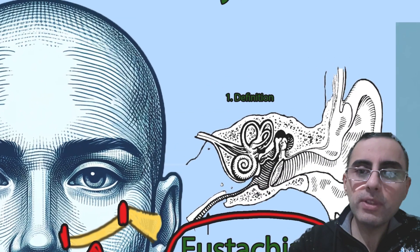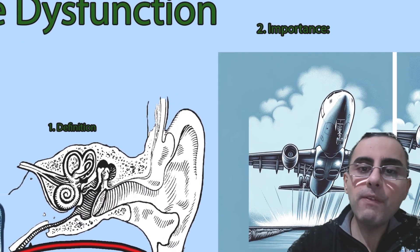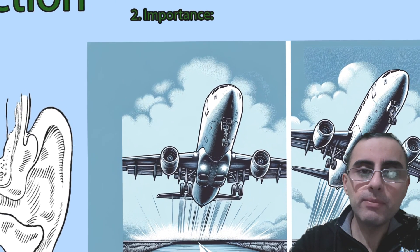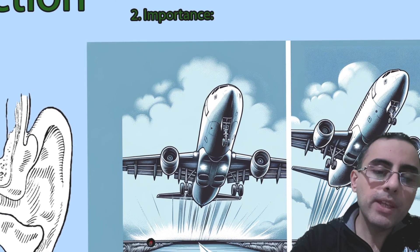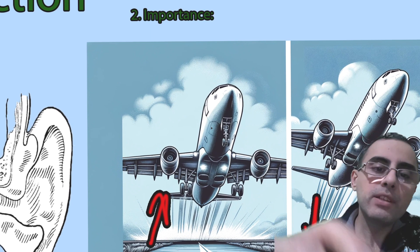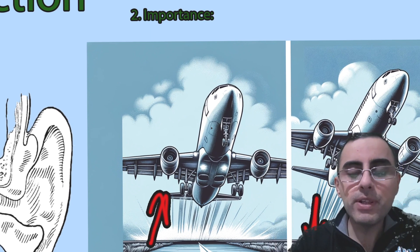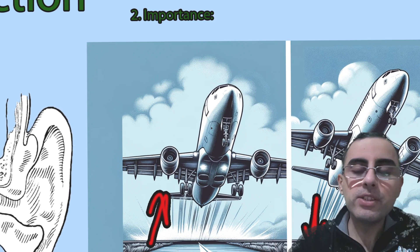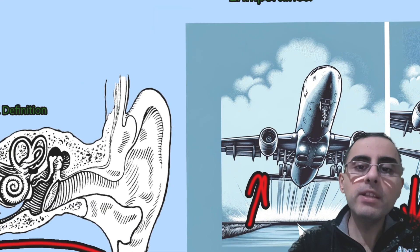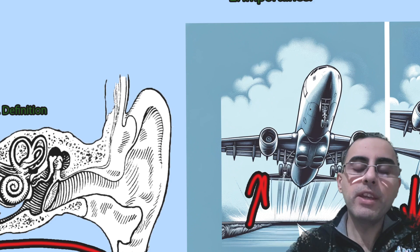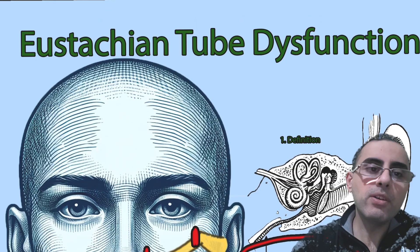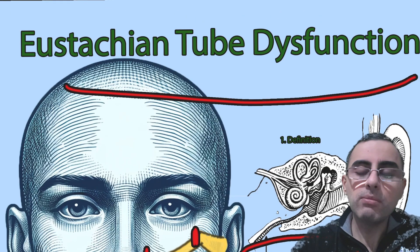Why is it important? Because it affects our daily life. For example, when an airplane takes off or lands, the environmental pressure changes suddenly and rapidly, and we feel fullness in the ear. This happens because of Eustachian tube dysfunction.